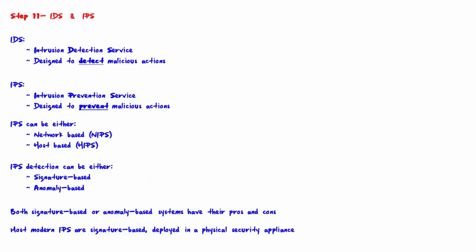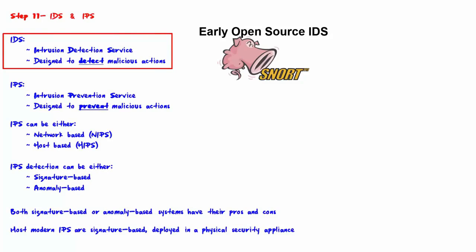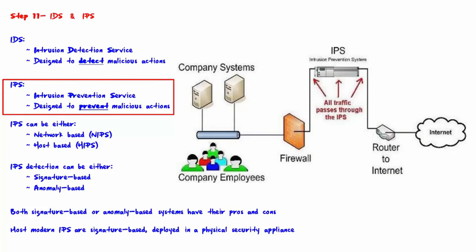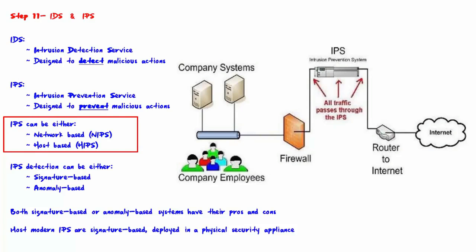Welcome to step 11: IDS and IPS. IDS, or Intrusion Detection Service, is designed to detect malicious actions that might occur on the network. IPS, or Intrusion Prevention Service, is designed to prevent malicious actions from occurring on our network. For modern implementations, we almost always deal with IPS, which prevents malicious actions and also logs each incident where a malicious action has been prevented. We will not deal with IDS here.